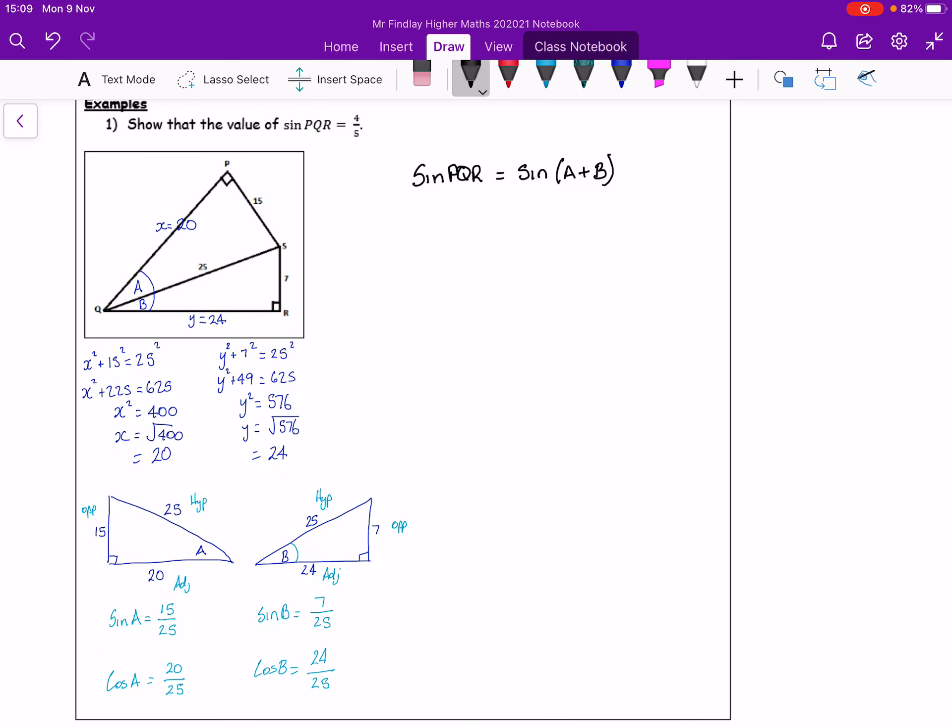So back to our expansion that we stated at the beginning. So sine of A, cos B, consistent for sine, plus cos of A, sine of B. And it's a case of taking each of the values. Sine A, 15 over 25. Cos B, 24 over 25. Just be careful you're taking the correct values. Cos A, 20 over 25. Multiply by sine B, 7 over 25.